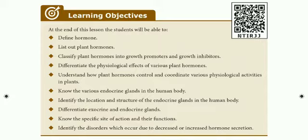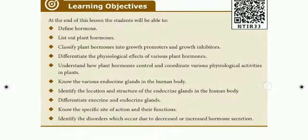In plants and animals, when hormones are at the correct natural level, physiological activity and metabolism are correct. However, if hormones increase or decrease from the normal level, it will affect the organism. These disorders affect both plants and animals. These are all the learning objectives for plant and animal hormones.